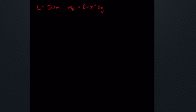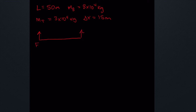First, let's talk about what they give us: the length of the bridge, the mass of the bridge which is 8 times 10 to the 4 kilograms, the mass of the truck which is 3 times 10 to the 4 kilograms, and the position of the truck — delta x — which is 15 meters. Let's draw a force diagram. The bridge is 50 meters long, with support columns on each side pushing up: that's F_A and F_B. Gravity pulls the bridge down at its center of mass — F_g_bridge — at 25 meters, and gravity pulls the truck down — F_g_truck — at 15 meters.